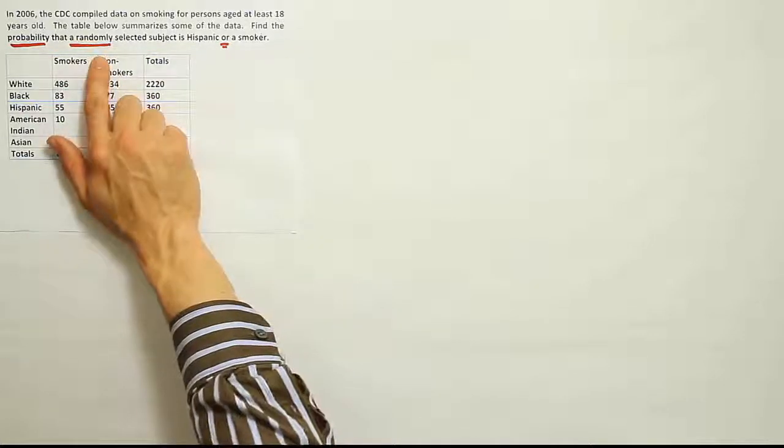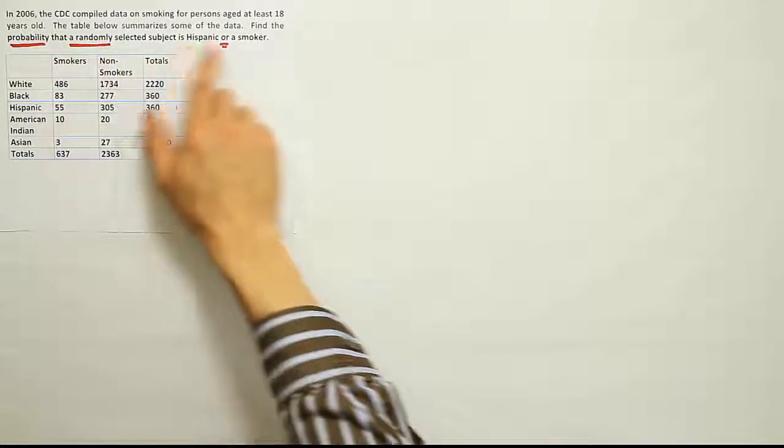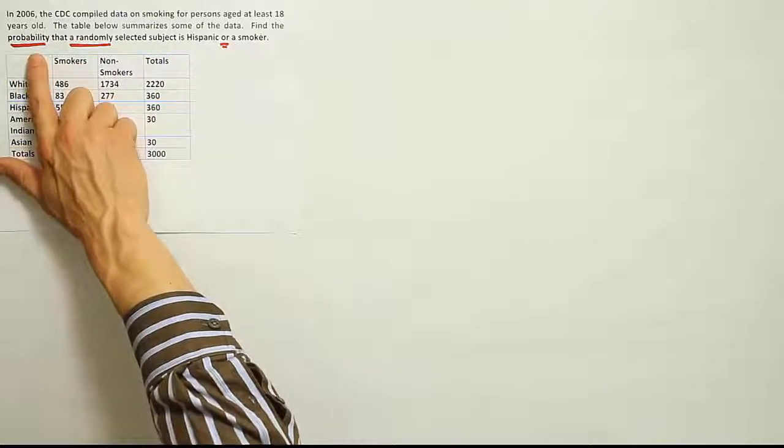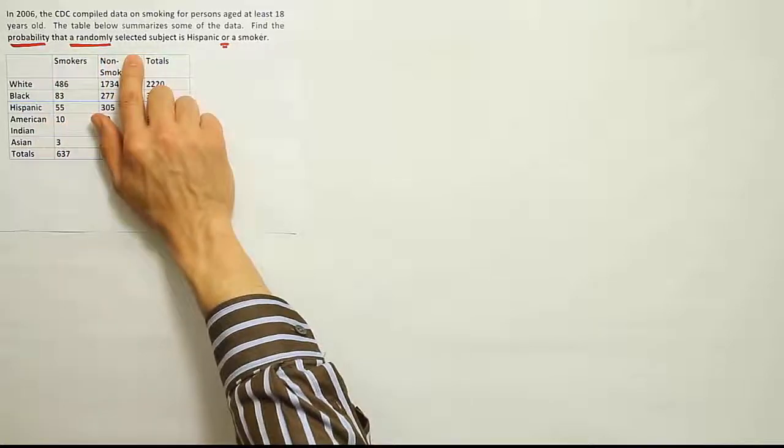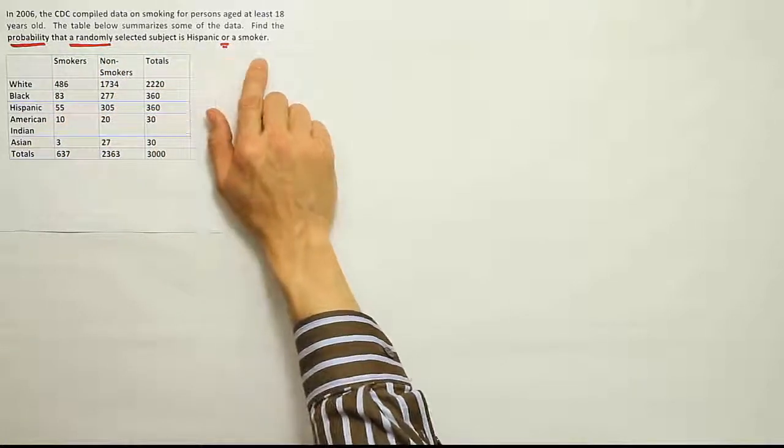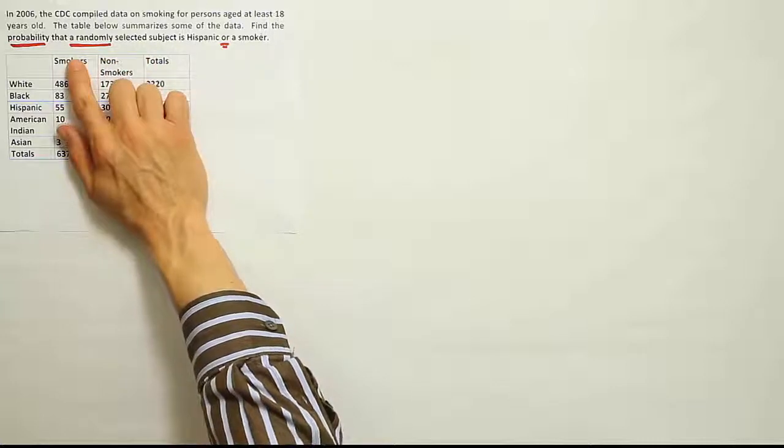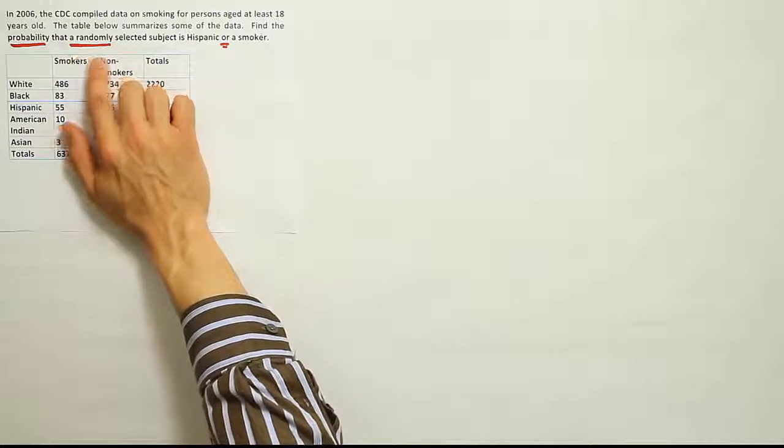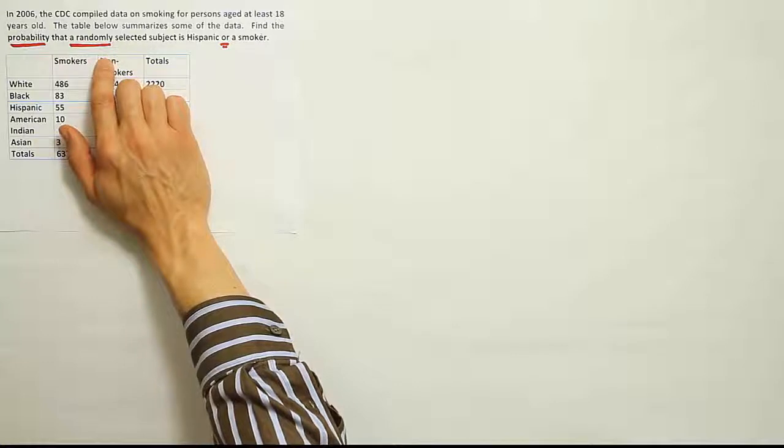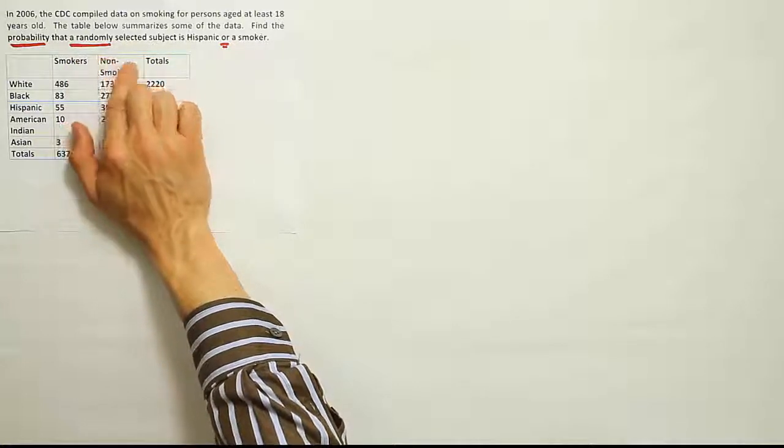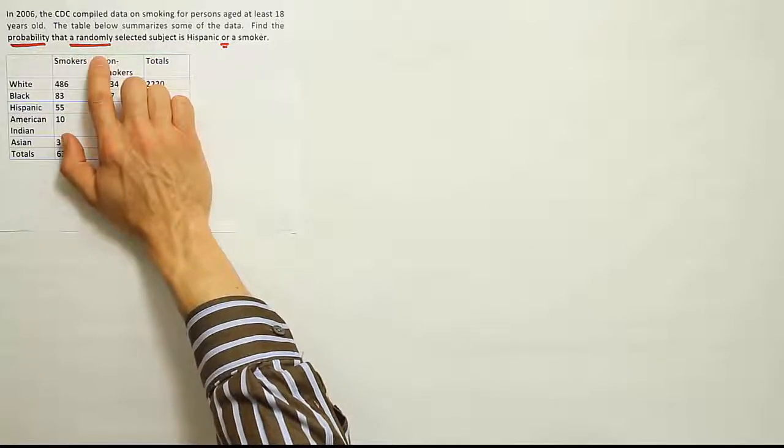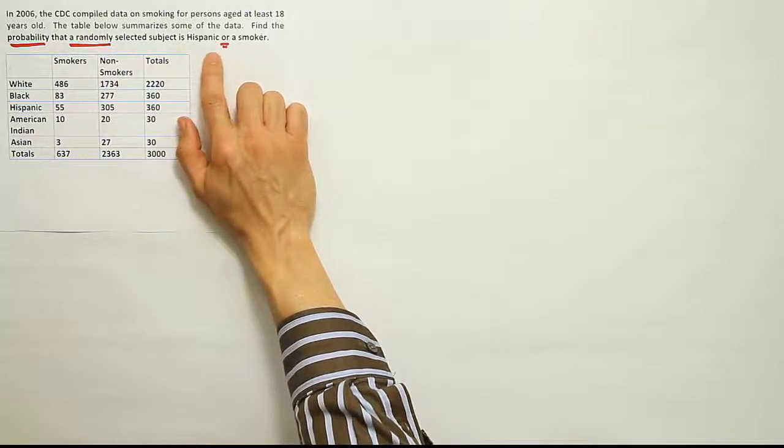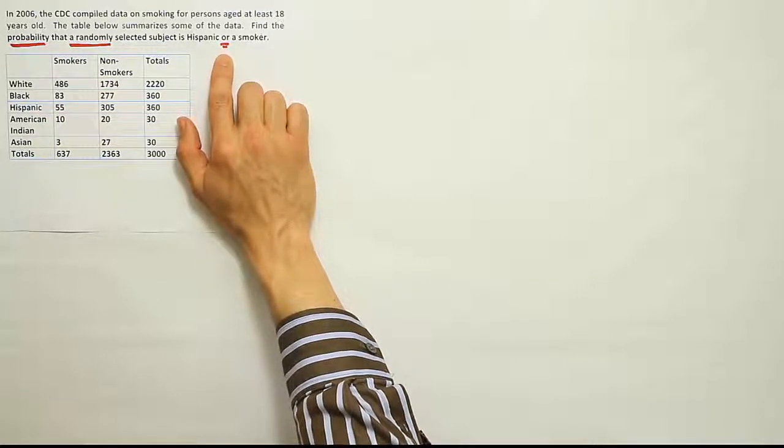So I want to look at this carefully here. Find the probability, so I've underlined that phrase. Probability that a randomly selected subject is Hispanic or a smoker. A randomly selected subject refers to just one subject being selected. That means it's one simple event, the event of grabbing one individual. That's a key phrase that tells me that this could be basic probability or perhaps maybe in this case, addition rule if it has the word or, and I've underlined that word as well because or is present in the problem.